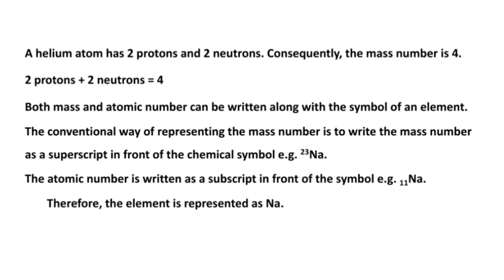Both mass number and atomic number can be written along with the symbol of an element. The conventional way is to write the mass number as a superscript in front of the chemical symbol — for example, sodium with superscript 23 means the mass number is 23. The atomic number is written as a subscript in front of the symbol — for sodium, the subscript is 11, which is the atomic number. Therefore the element is represented as Na with mass number 23 and atomic number 11.